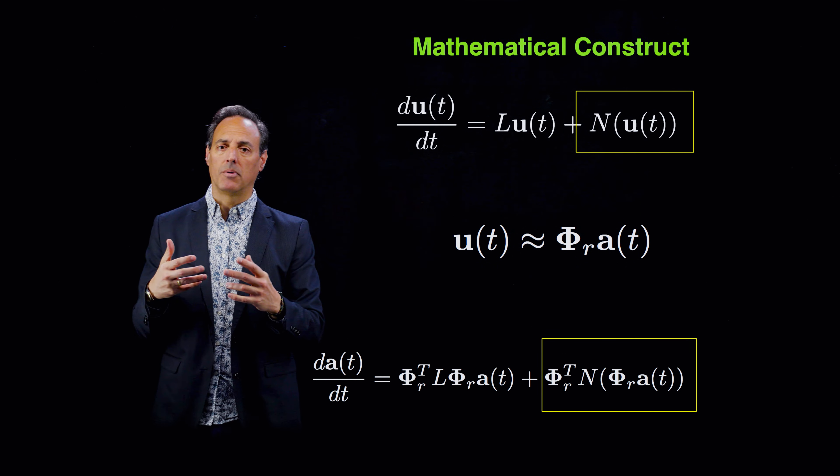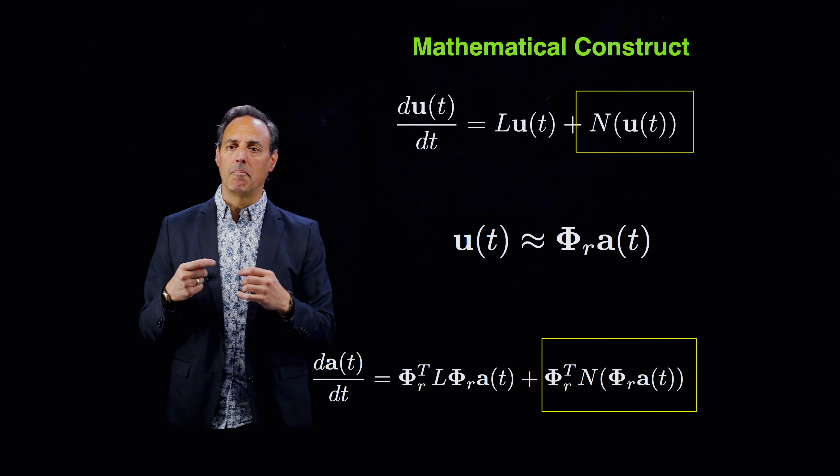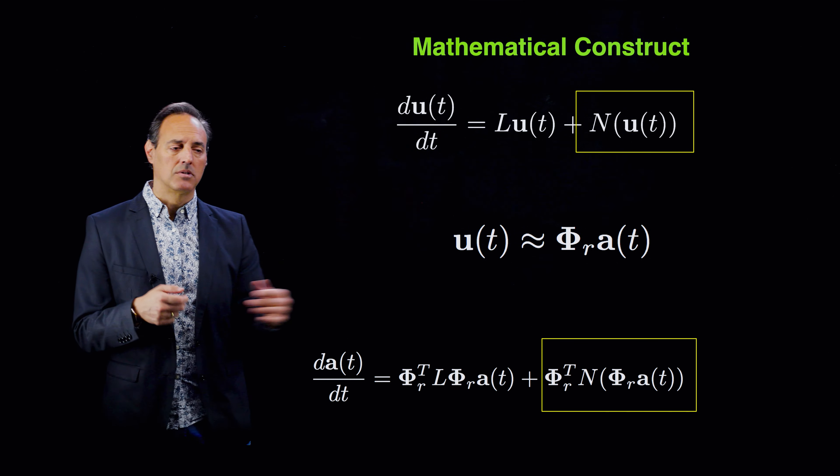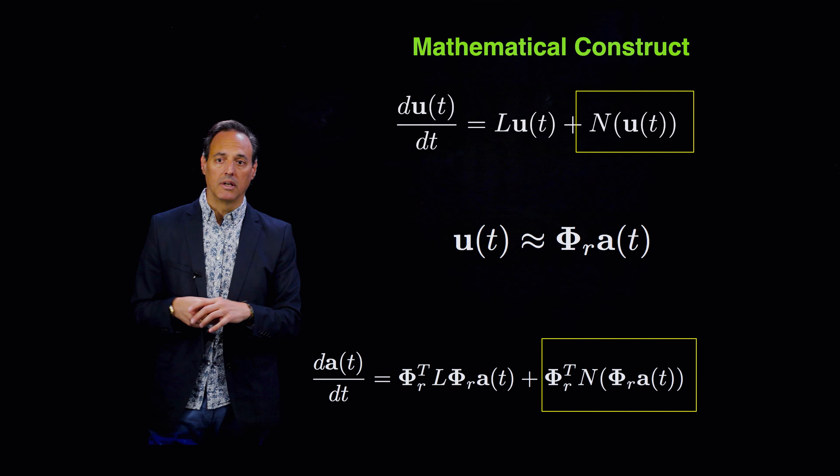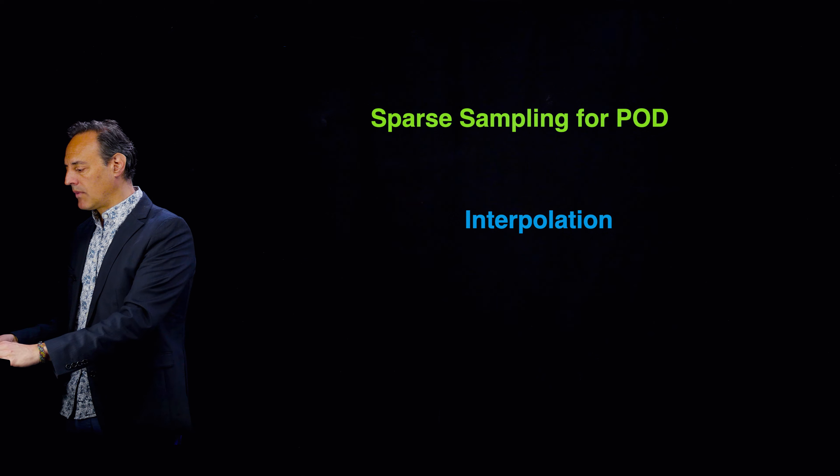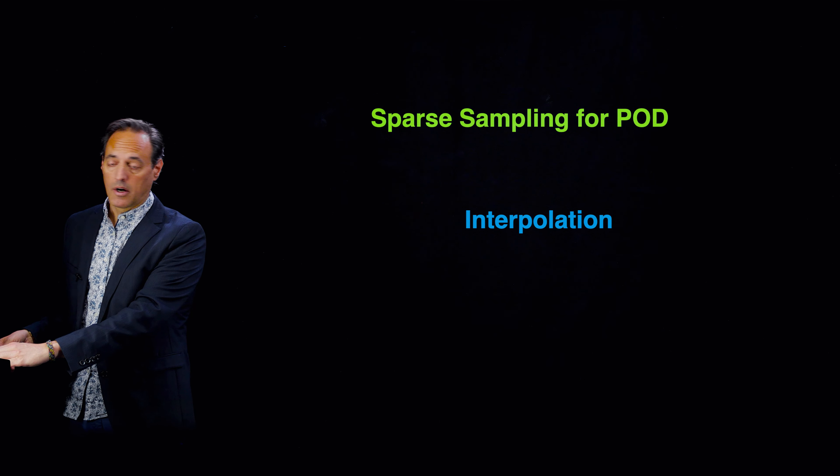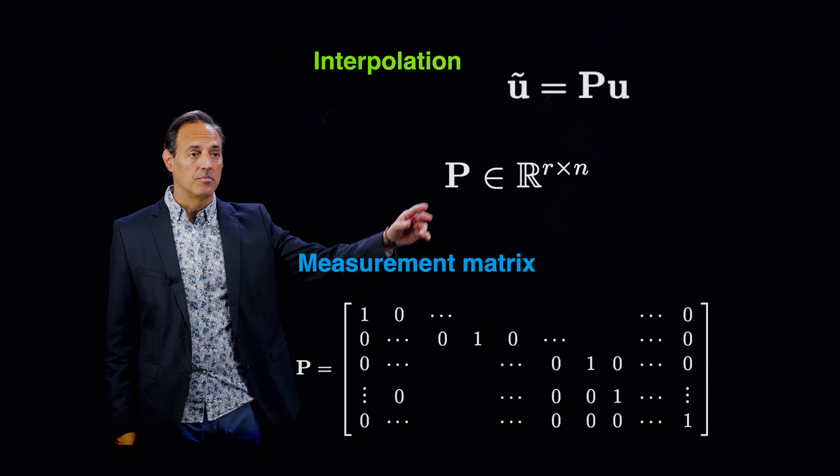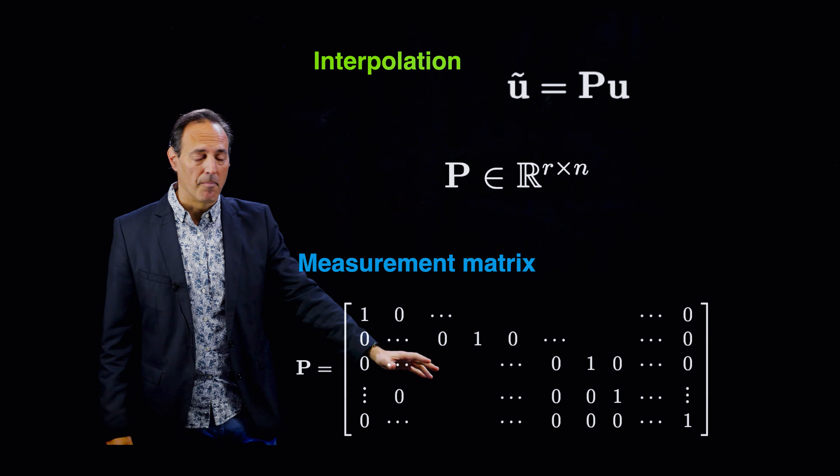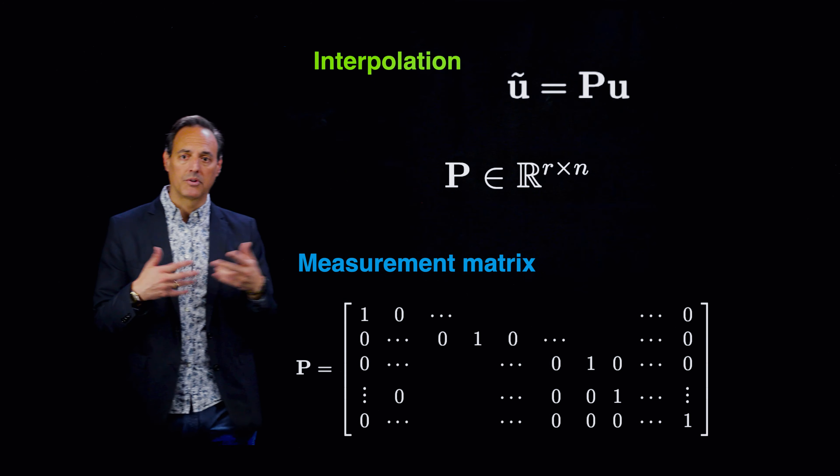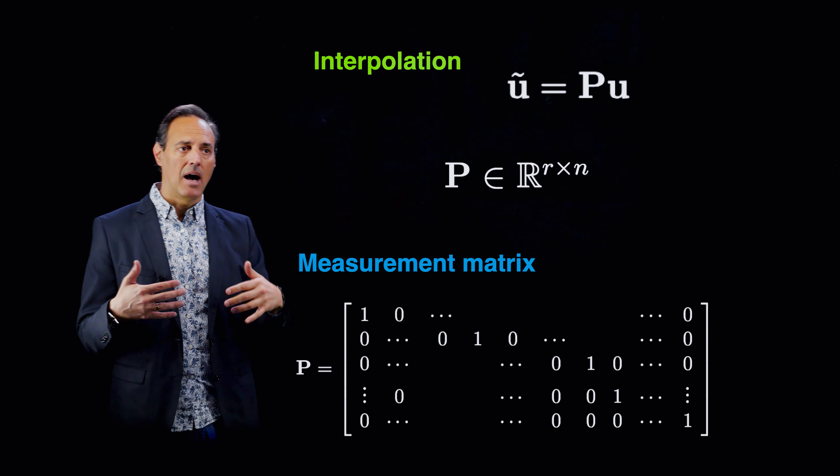We've talked so far about this gappy POD methodology from Everson and Sirovich that was thinking about random sampling to compute these inner products. In the last lecture I talked about principled architecture developed by Karen Wilcox, with algorithms that provide principled architecture for figuring out what are the best sampling interpolation locations that help us compute this much more efficiently with low error.